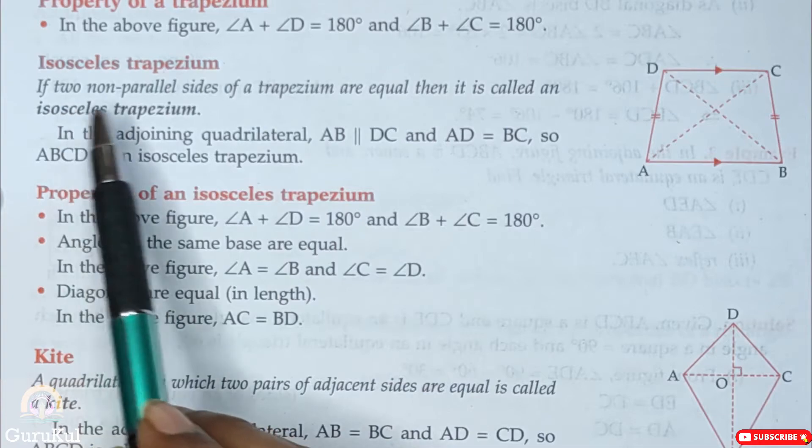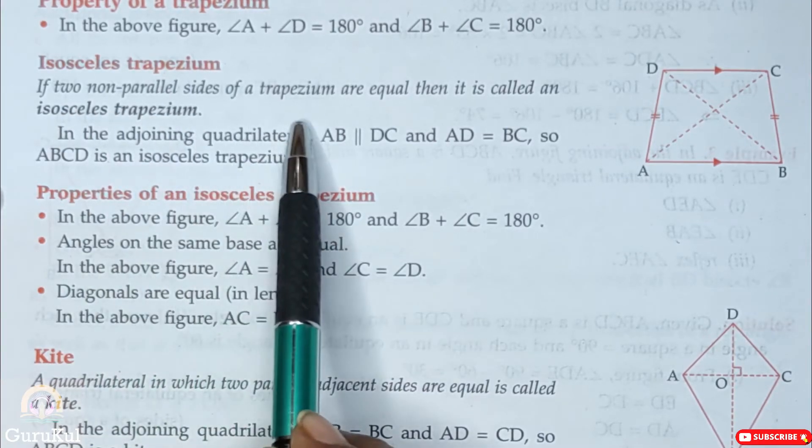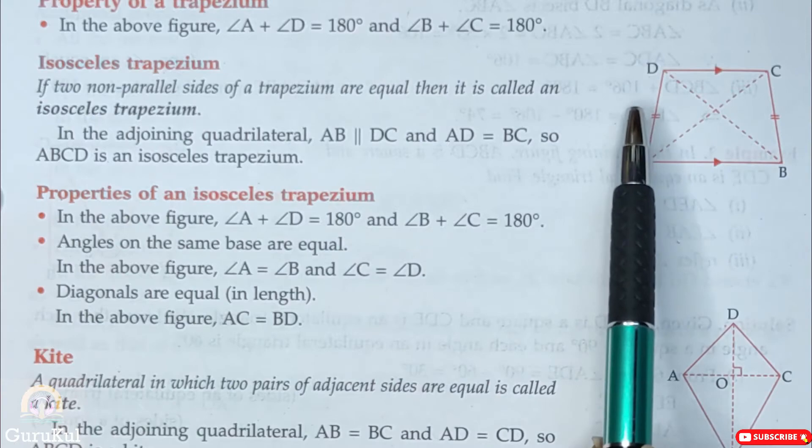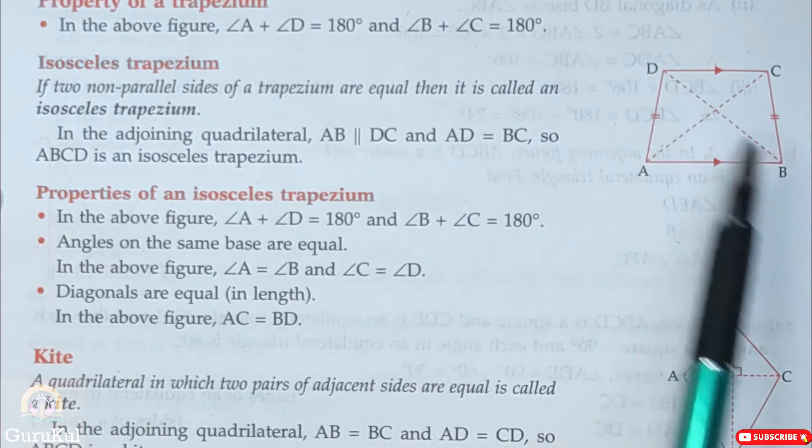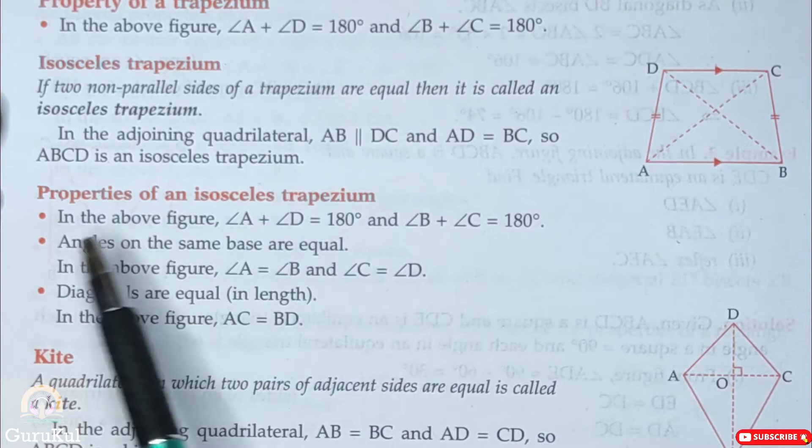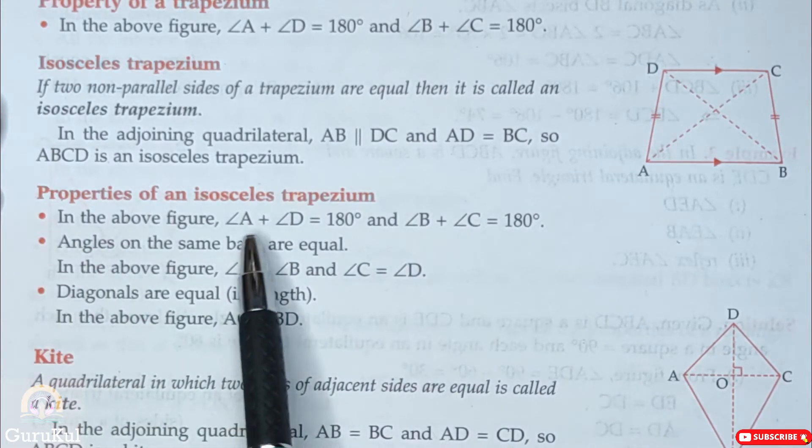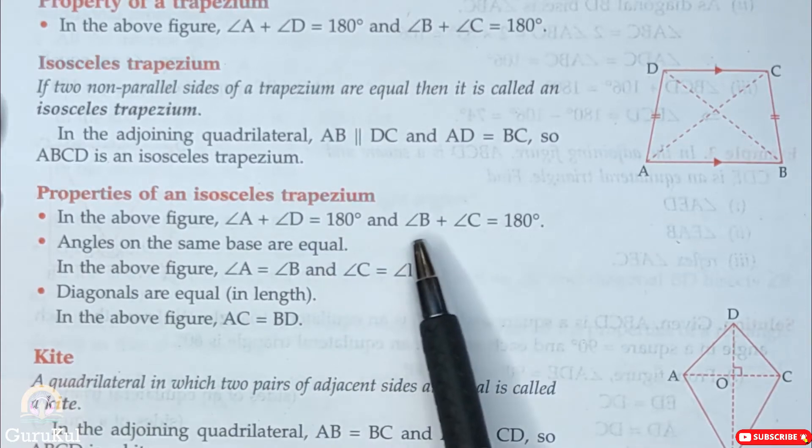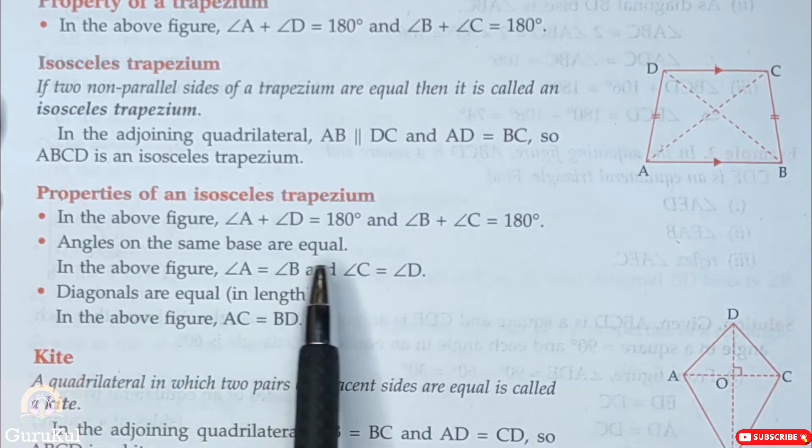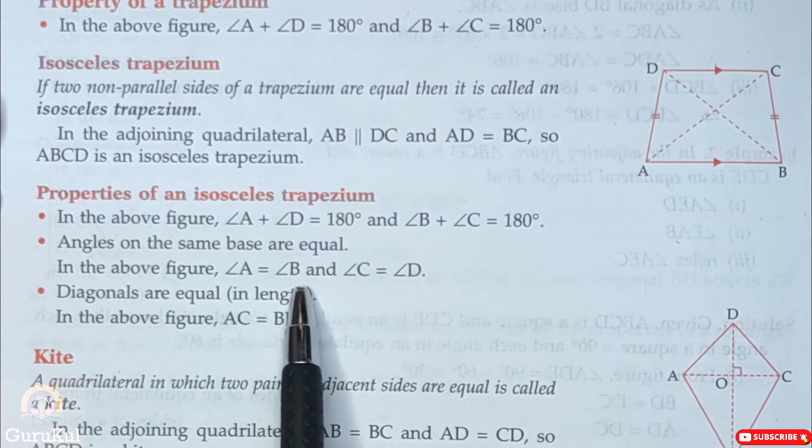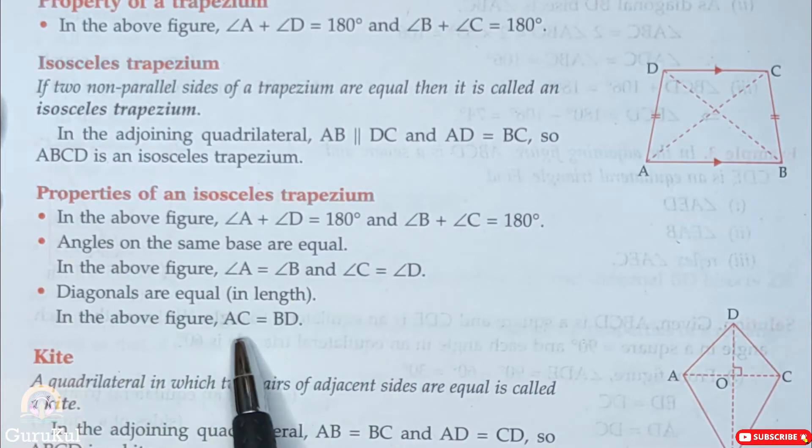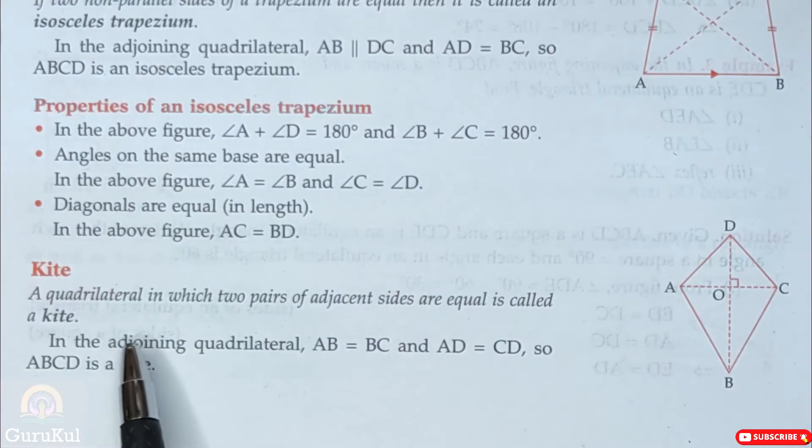Isosceles trapezium. If two non-parallel sides of a trapezium are equal, then it is called an isosceles trapezium. As you can see, AB is parallel to DC and AD is equal to BC. So ABCD is an isosceles trapezium. Now what are its properties? That angle A plus angle D is equal to 180 degrees. Similarly, angle B plus angle C should be 180 degrees. Angles on the same base are equal like angle A is equal to angle B and angle C is equal to angle D. And diagonals are equal in length. As you can see that AC is equal to BD.